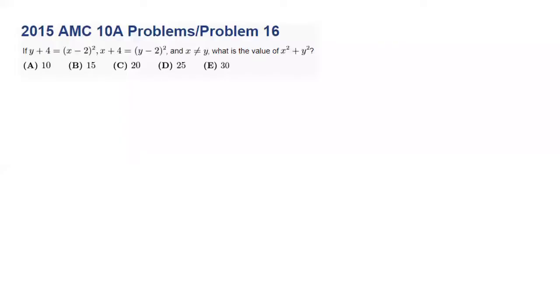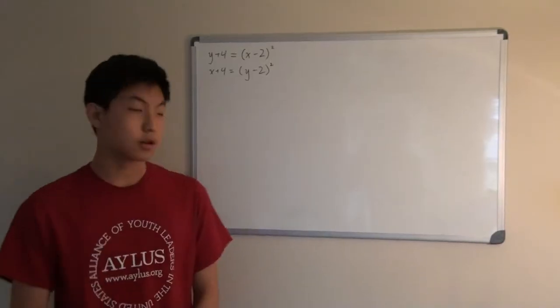Today we will be taking a look at the 2015 AMC 10A problem number 16. If y plus 4 equals x minus 2 whole squared, x plus 4 equals y minus 2 whole squared, and x not equal to y, what is the value of x squared plus y squared?